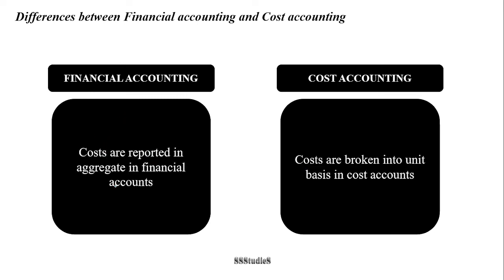In financial accounting, costs are reported in aggregate. For example, salaries are not written individually for the production department, marketing department, or purchasing department — each item is projected in the profit and loss account as an aggregate total, showing how much money was spent on salary overall. In case of cost accounting, costs are broken down on a per unit basis — what is the cost incurred per unit produced. That is the focus of cost accounting: cost on a per unit basis, whereas financial accounting looks at costs on an aggregate basis in totality.